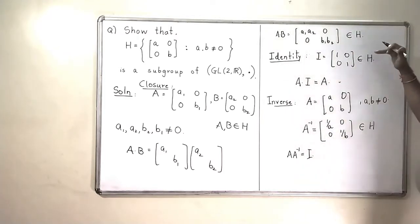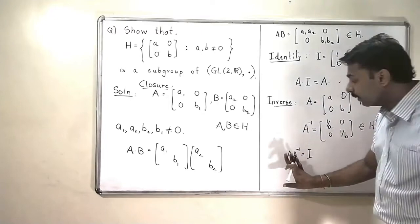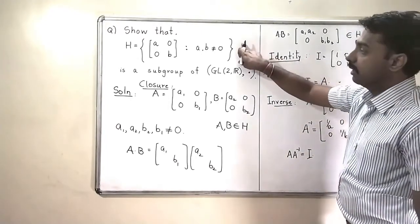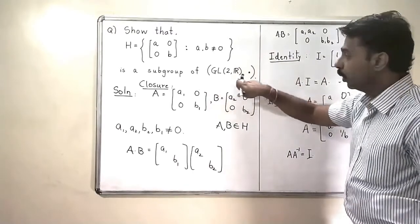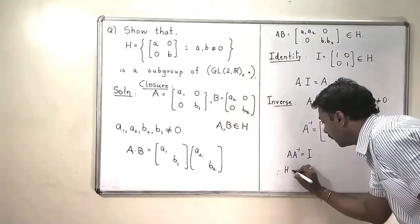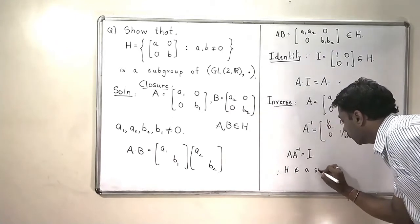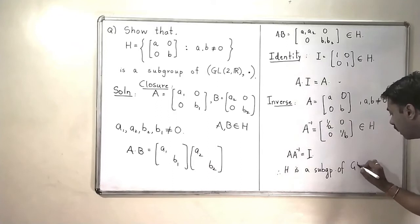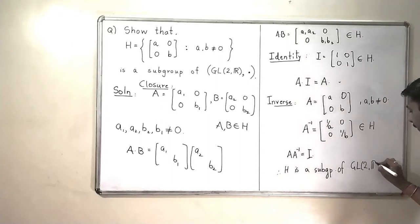So, closure, identity and inverse, all the three properties are satisfied and therefore, this means that this H will form a subgroup of GL(2,R). So H is a subgroup of GL(2,R) with respect to matrix multiplication. This completes our problem.